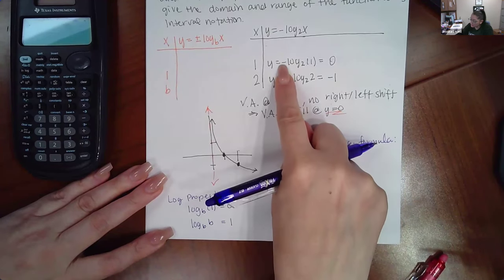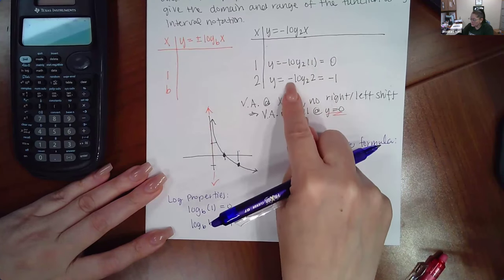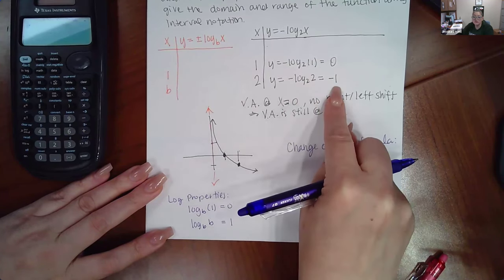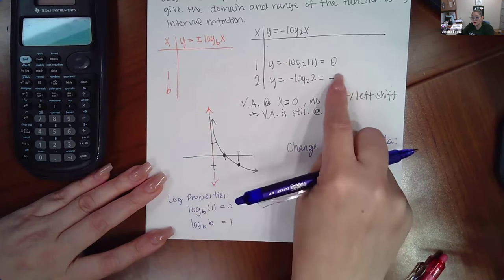The only difference is I had a negative here, but negative zero is still zero. Whereas here, negative one will result in negative one. But these are the two log properties that I use to find these two values.